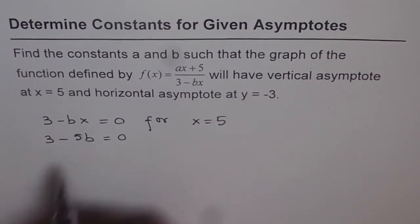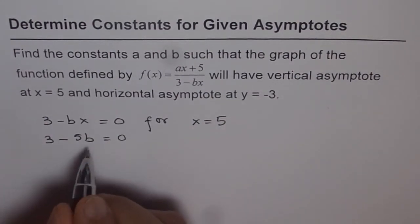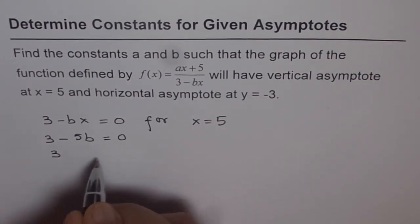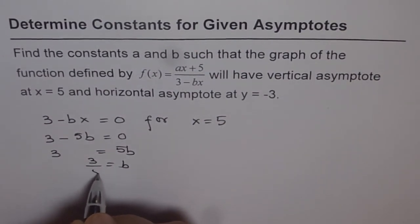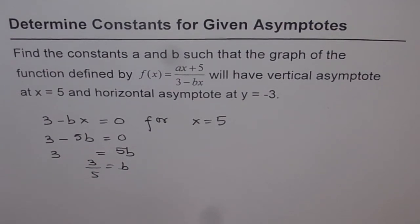From here you can find what b is. So you can solve for b, that is 3 equals 5b or b equals 3 over 5. So we get the value of b from here.